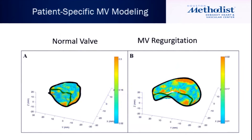This is a mitral valve prolapse, so you can measure deformation of the mitral valve and plot it in 3D. In mitral regurgitation, as opposed to normal, you have much more strain and much more deformation of the valve. We also can't measure strain of the chordae themselves, which could be the problem down the line.